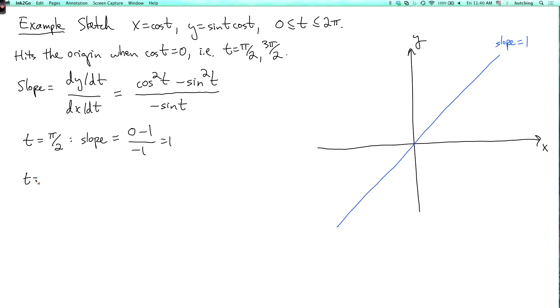Now if t equals 3 pi over 2, what's the slope? Well, now cosine is still 0 and sine is minus 1. So this is 0 minus 1 over minus minus 1, which is now minus 1. So let's draw a line of slope minus 1 through the origin. That will look like this. So that's the tangent line to the curve when t equals 3 pi over 2.